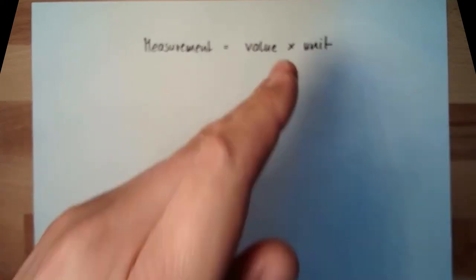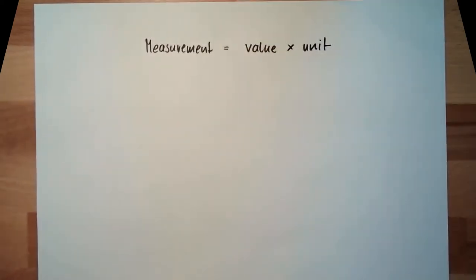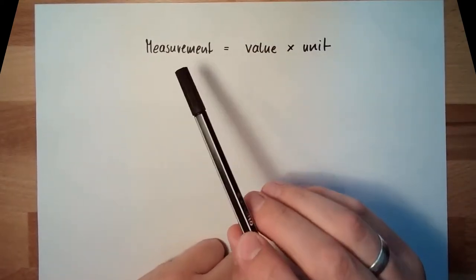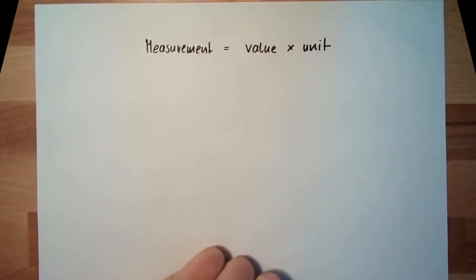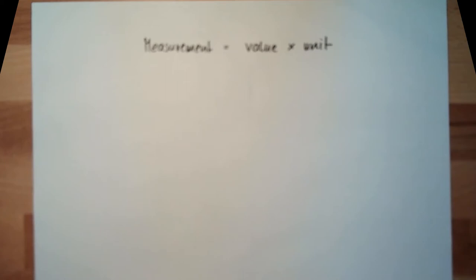So a measurement consists of a value and a unit. Zahlenwert and Einheit in German. Measurement value and unit. The measurement itself describes how many of the units have been measured. There are several units out there.